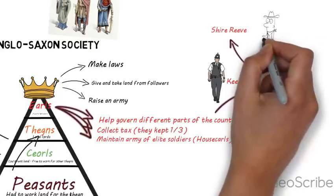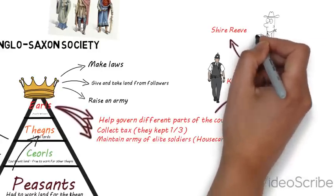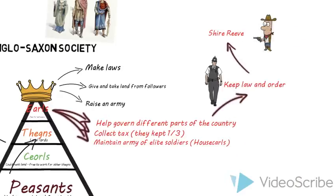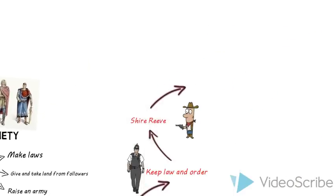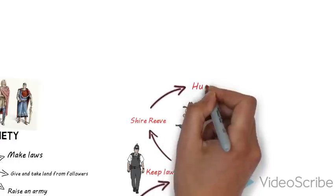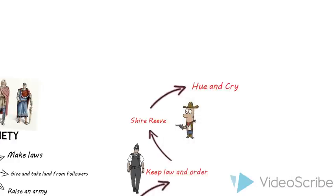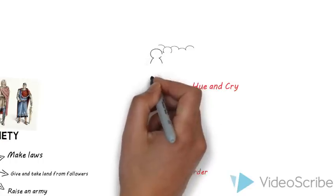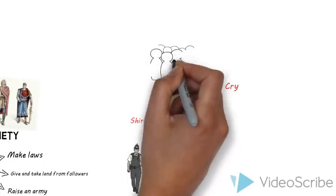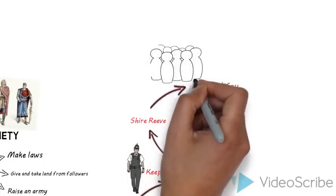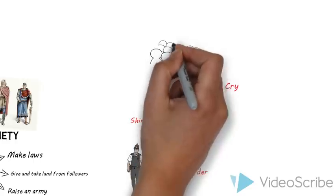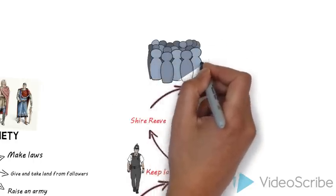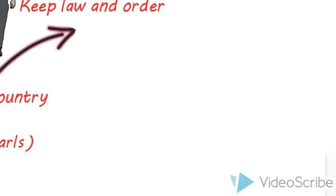The shire was divided into hundreds and then into tithings. A tithing was about 10 households. If a crime was committed, it was up to all the people in the tithing to find the person who committed the crime — this was called the hue and cry. When it was raised, they would charge about looking for the person who committed the crime within their tithing. If they couldn't find who committed the crime, the whole tithing would be punished. And as you can imagine, in Anglo-Saxon England, some of these punishments were really brutal.